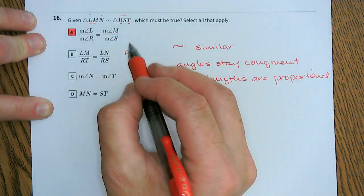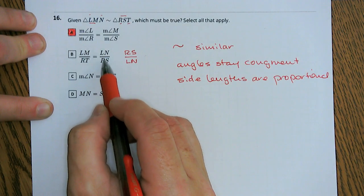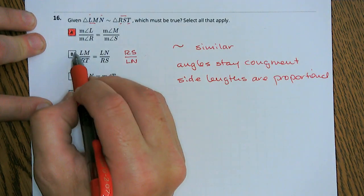Excuse me, first and third, first and third. It should have been LN. Notice this is upside down, so it can't be B.